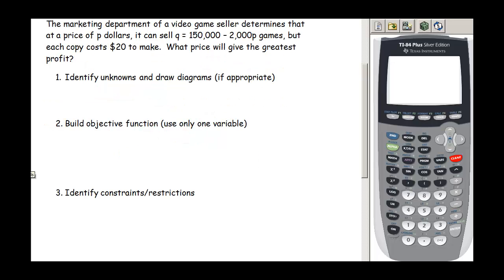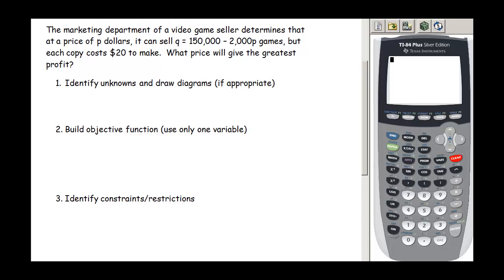So let's look at this first example. It says the marketing department of a video game seller determines that at a price of P dollars, it can sell Q equals 150,000 minus 2,000P games, but each copy costs $20 to make. What price will give the greatest profit? So let's go through our process here. We have steps one, two, and three written on this page. The first thing we need to do is identify our unknowns.